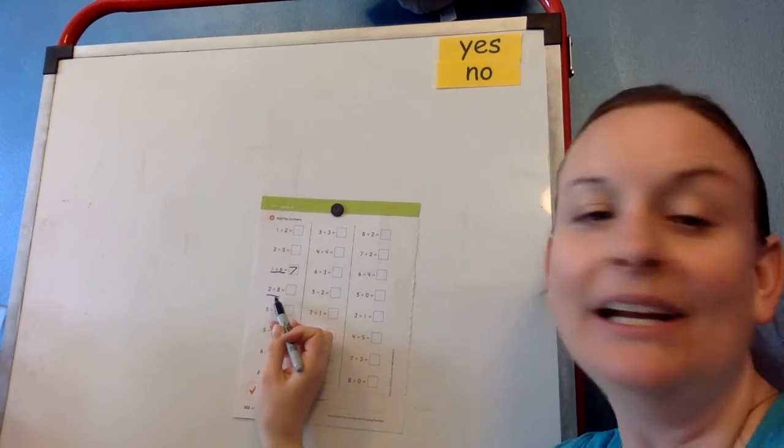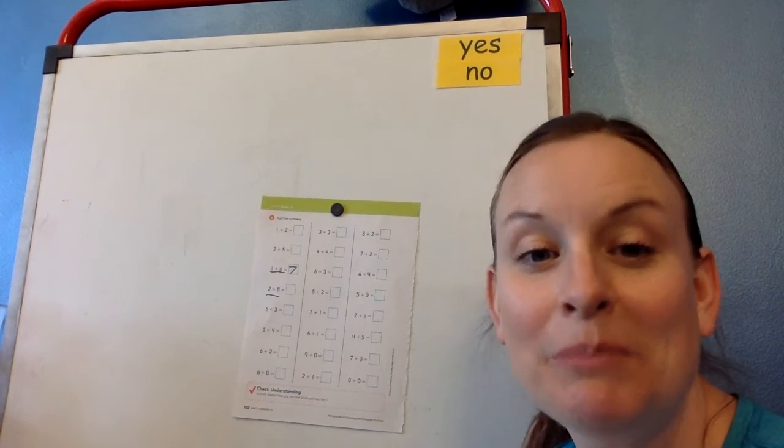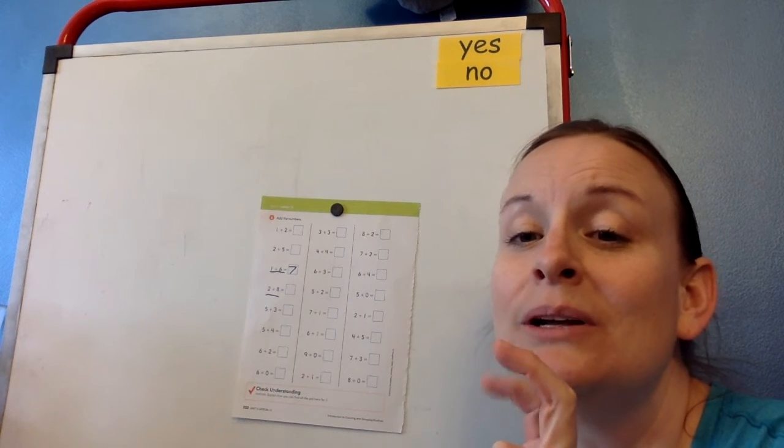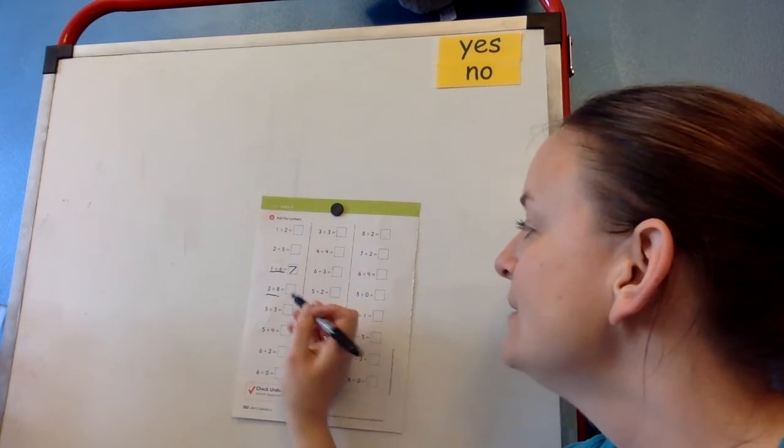Now this one right here, I see two plus eight. Now the best would be if you remember the partner numbers of 10, that when two little caterpillar or ladybug babies woke up, then eight were still sleeping. So that's a partner of 10.